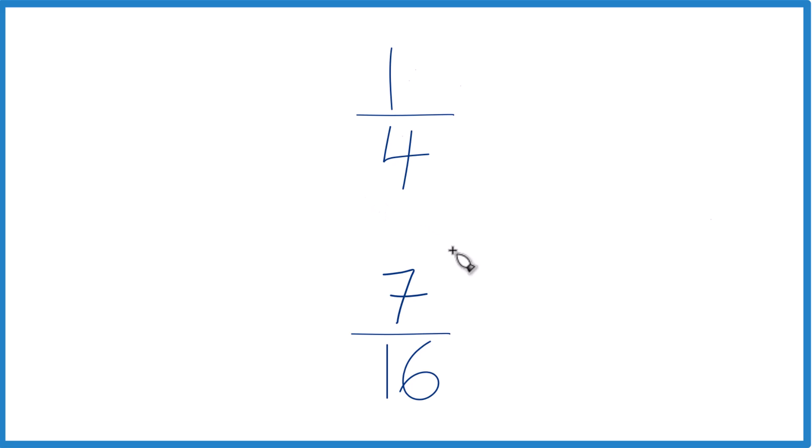The other way to do it would be to find a common factor, something that 4 and 16 both go into. Because if we have the same denominator, we just compare the numerators and know which fraction is greater.